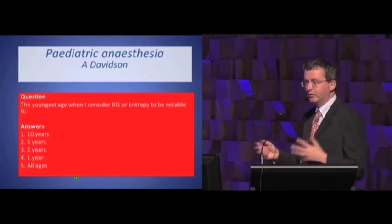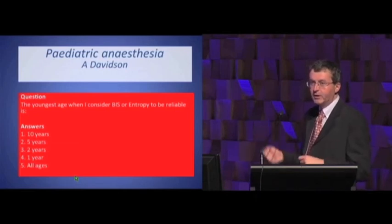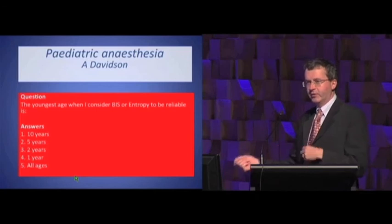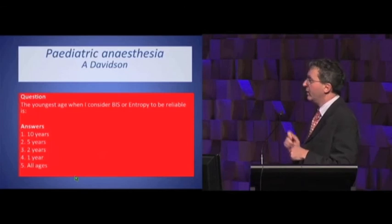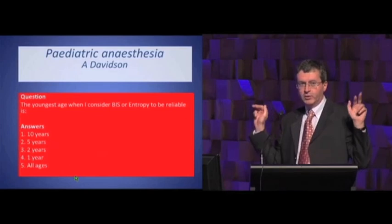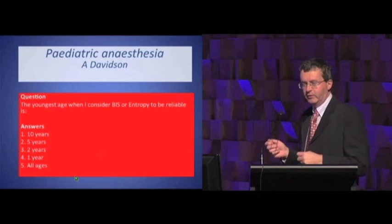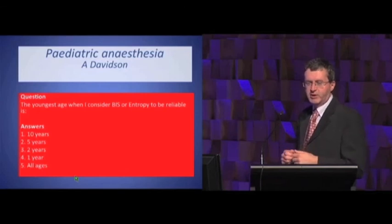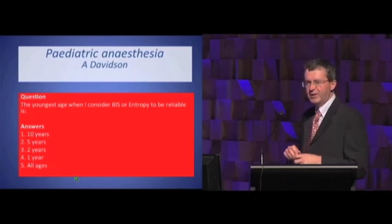What we tend to do is experiments where you turn the anaesthetic up and down and see if the numbers go up and down, or whether the numbers differentiate between people being awake or anaesthetised. For children down to about the age of two, they work in that if you turn the anaesthetic up and down, the numbers tend to go down and up. Provided you keep the BIS or entropy less than 60, you can be pretty much guaranteed that the child will be unconscious. Less than the age of two, it becomes much more unclear as to whether they work.